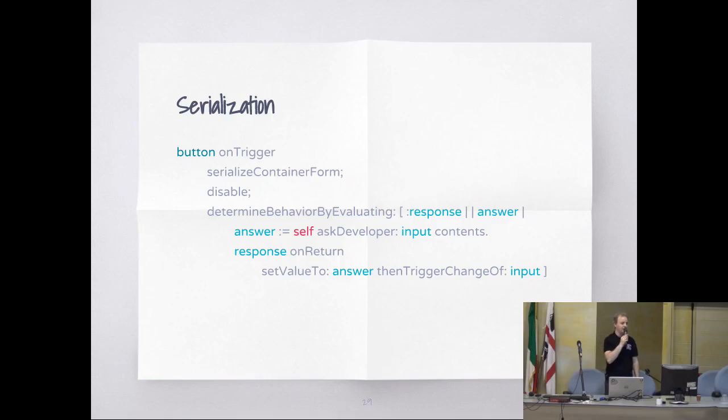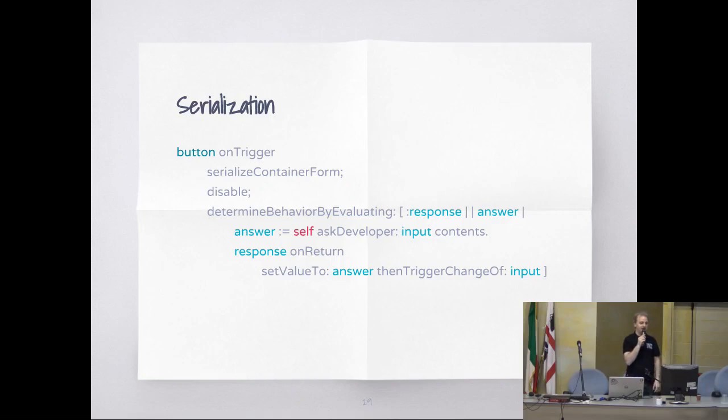Here's a more complex example — we are doing several things. Button on trigger: serialize container form, disable me (we disable the button), and evaluate a callback. The AJAX callback will open something in a dialog, and when the response comes back, replace the input value with the answer.